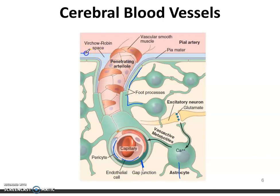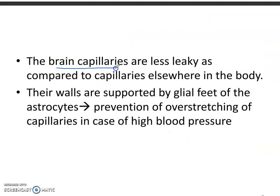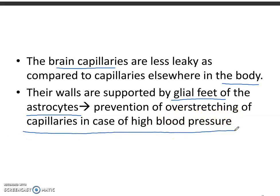This is the Virchow-Robin space, between the foot processes of the astrocytes and the artery cells. The brain capillaries are less leaky as compared to capillaries elsewhere in the body. They are also supported by the glial feet of the astrocytes, which prevent over-stretching of the capillaries in the case of high blood pressure. Because the brain needs a lot of blood to operate, the capillaries are not leaking.